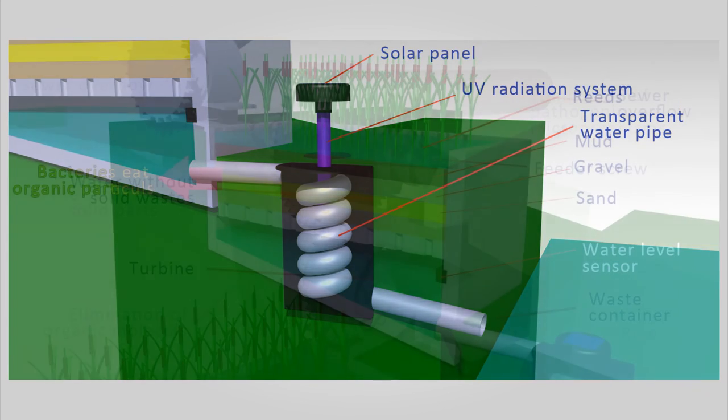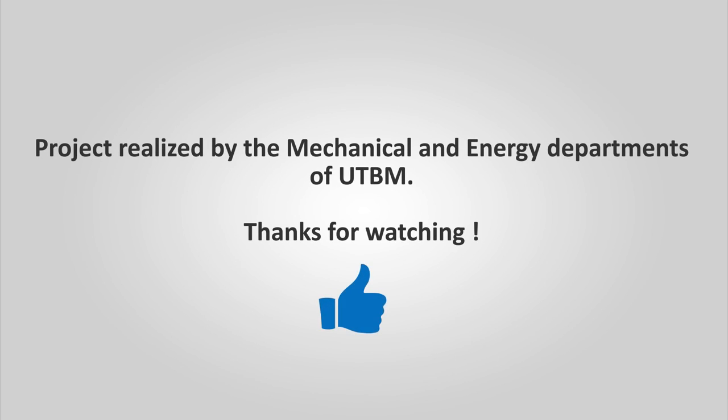When the solar panel isn't able to power the light, the turbine gives energy to the light to produce UVs.